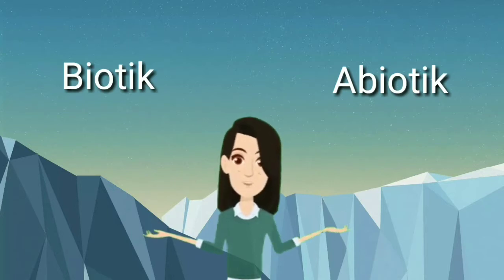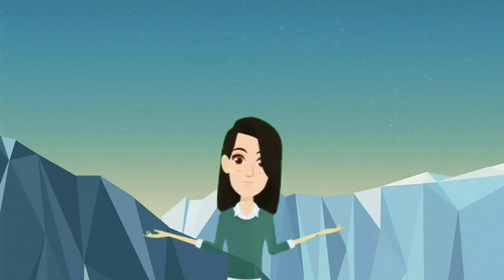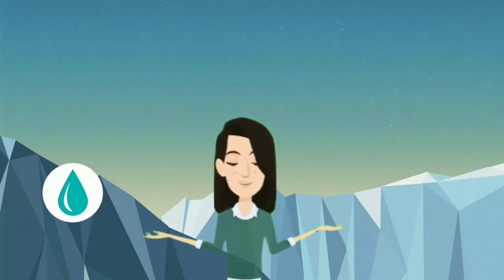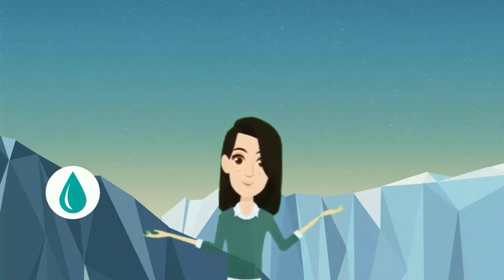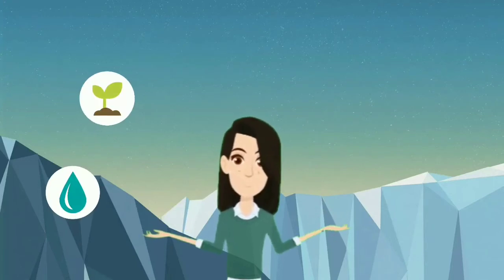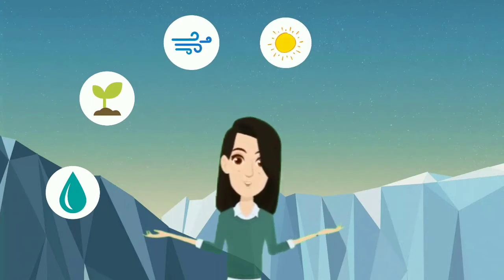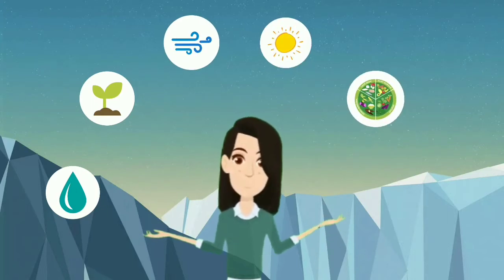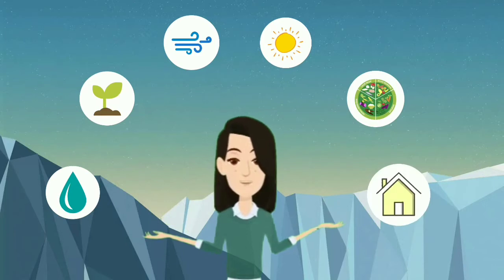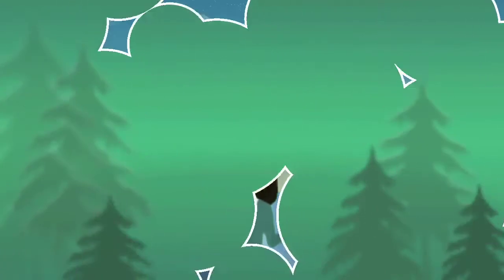Terdapat beberapa komponen penting di dalam habitat, antara lain air, tanah, udara, sinar matahari, sumber makanan, tempat tinggal, dan yang lainnya.